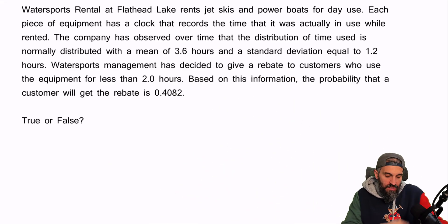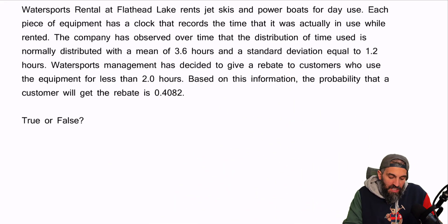So in this question, it says water sports rental at Flathead Lake rents jet skis and power boats for day use. Each piece of equipment has a clock that records the time that it was actually in use while rented. The company has observed over time that the distribution of time used is normally distributed with a mean of 3.6 and a standard deviation of 1.2. Management has decided to give a rebate to customers who use the equipment for less than two hours. Based on this information, the probability that a customer gets the rebate is 0.4082. True or false? Well, let's see.